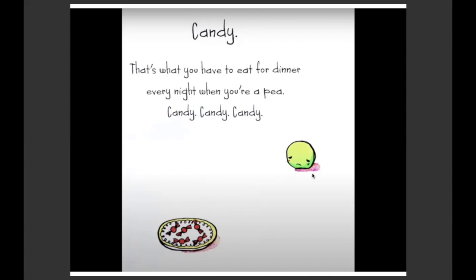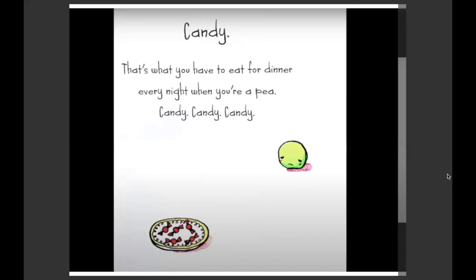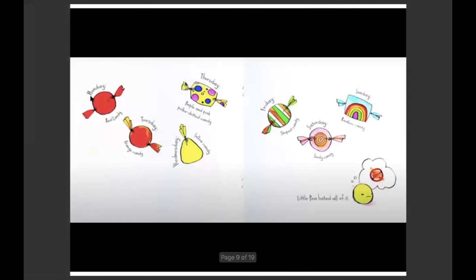Little P looks so sad, doesn't want to eat candy. Monday red candy, Tuesday orange candy, Wednesday yellow candy, Thursday pink and purple polka dotted candy, Friday striped candy, Saturday swirly candy, Sunday rainbow candy. Little P hated all of it.